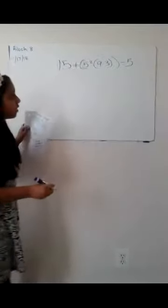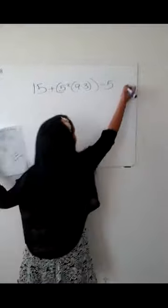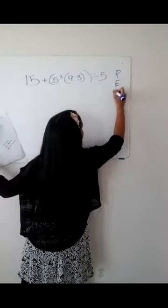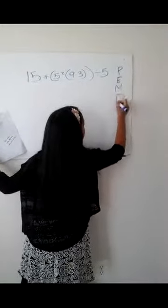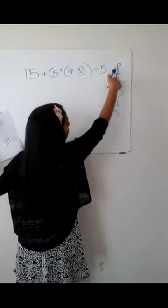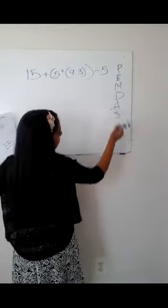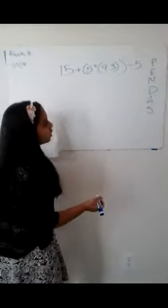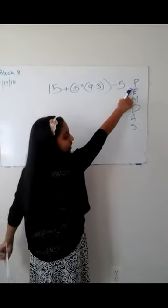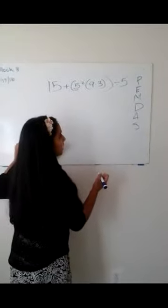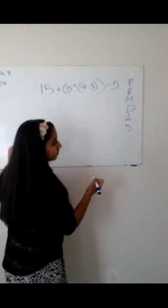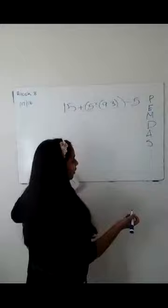Okay, what do we start off with first? 15 plus 5? Actually, we've got something called PEMDAS, which is parentheses, exponents, multiplication, division left to right whichever comes first, and same thing with addition and subtraction. So we start off with this. What is that? P. And what is P? I don't know. Parentheses.